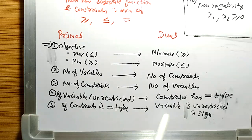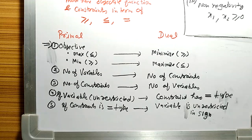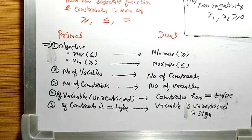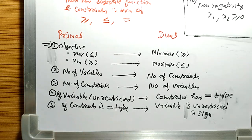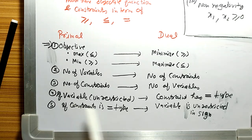The fourth rule states: if a variable is unrestricted in the primal, then when we write the dual form, the corresponding constraint will be of equal type. Conversely, if a constraint is of equal type in the primal, then in the dual form the corresponding variable will be unrestricted. So there is an inter-conversion: variable unrestricted → constraint equal type, and constraint equal type → variable unrestricted.